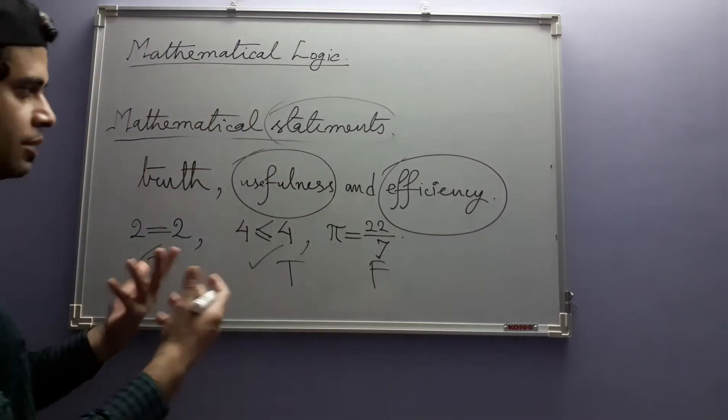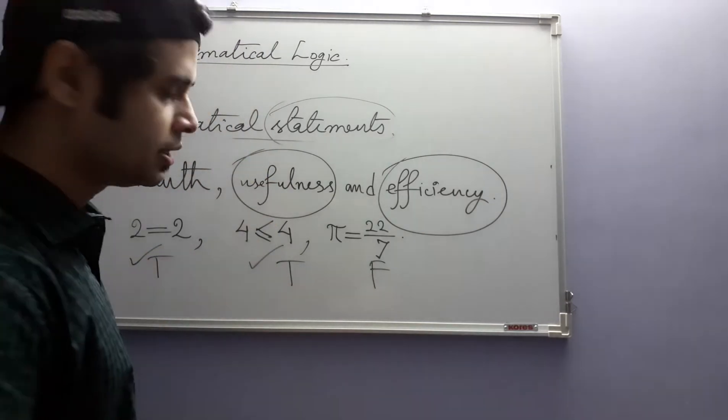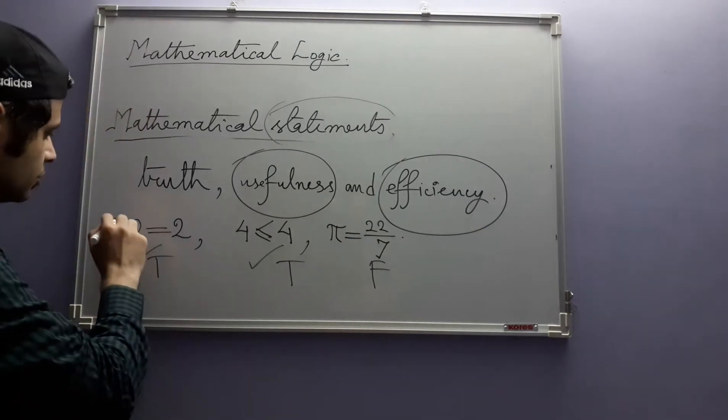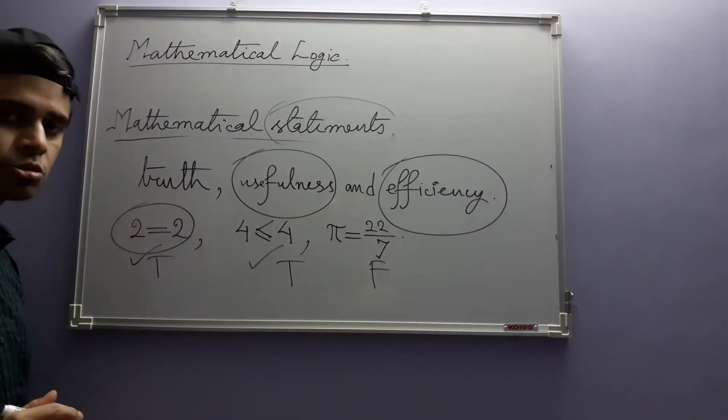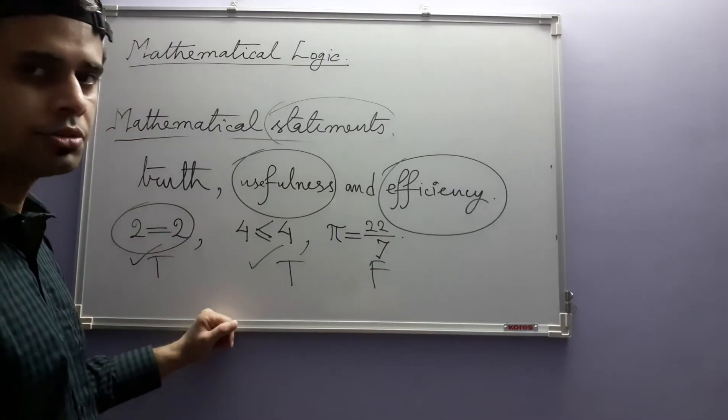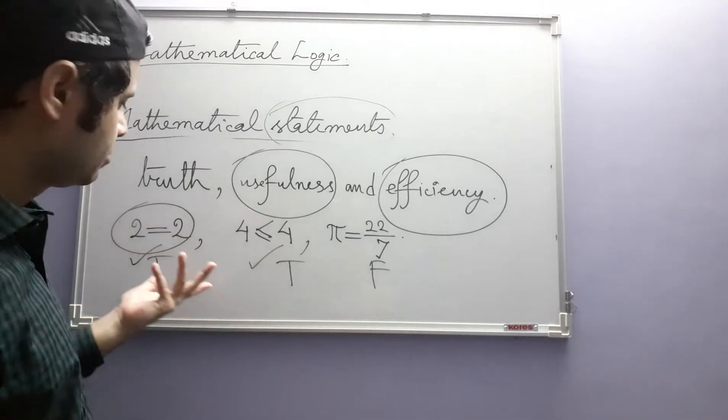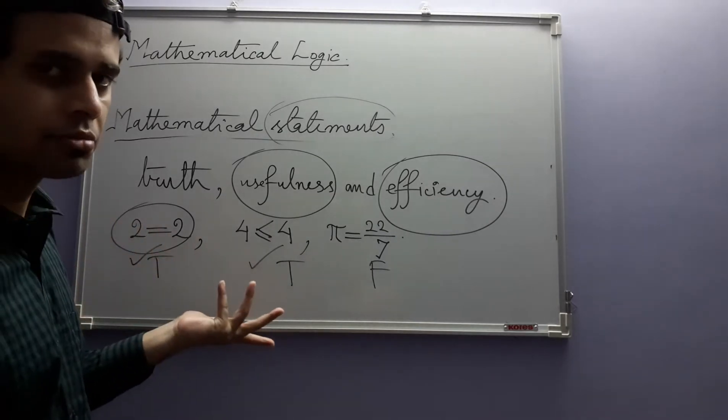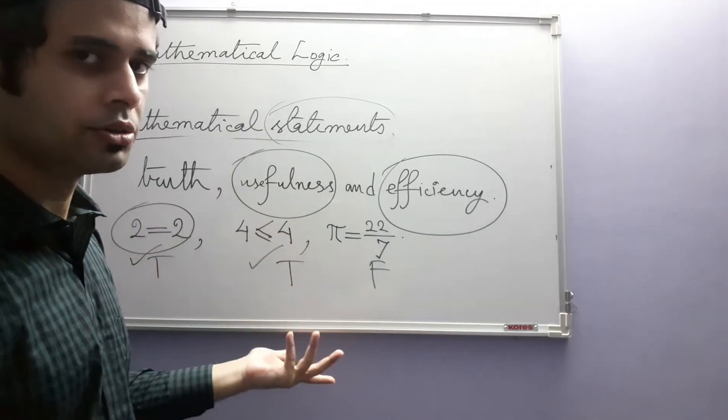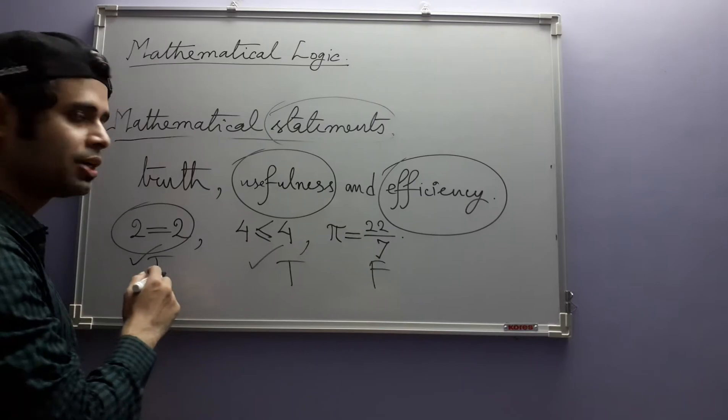Now, but what about usefulness or efficiency? You see, 2 equal to 2 is true, but it is not very useful. 2 is equal to 2, that is fine, but where will it be used, where will you use it? Probably nowhere.